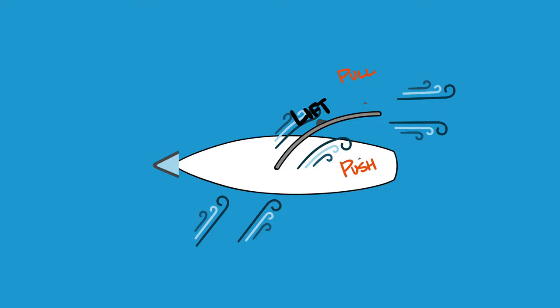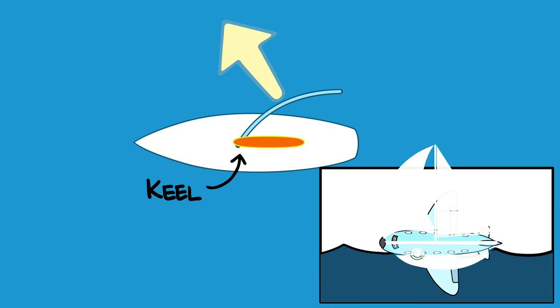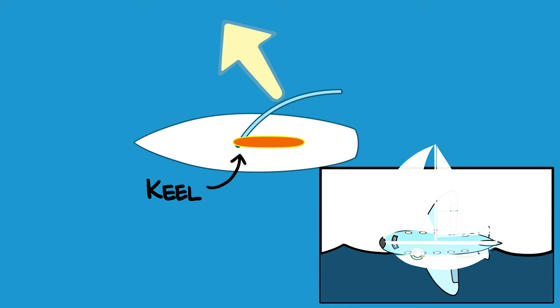Well, no need to look far, because the secret sailors like to call the keel is hidden right beneath us. Remember that a sailboat is actually an airplane on its side. The sail is one of the wings and the keel is the other one, hidden underwater.